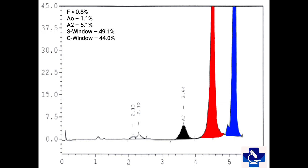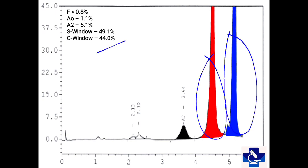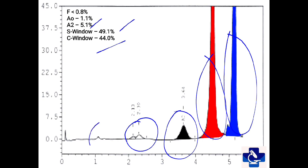In this HbC graph, we have the C window having 44% of hemoglobin and the S window having 49% of hemoglobin. A2 is raised at around 5.1%, A0 is 1.1%, and fetal hemoglobin is less than 0.8%. Obviously, this is a graph of sickle and hemoglobin C double heterozygous.